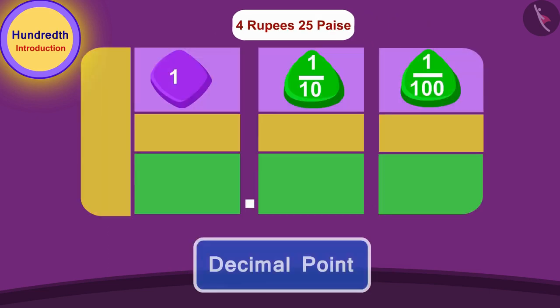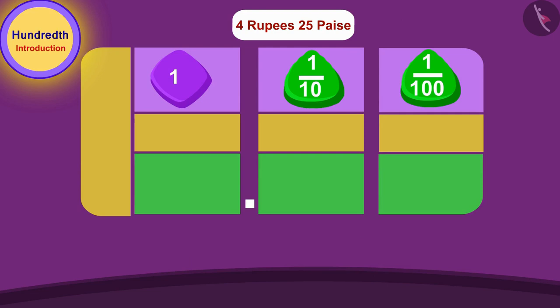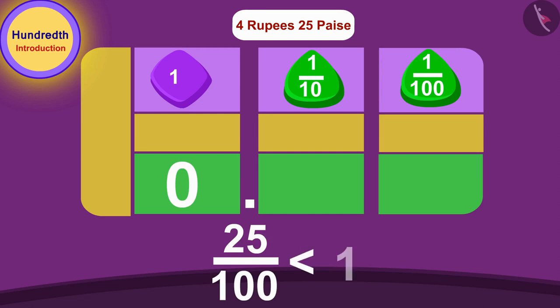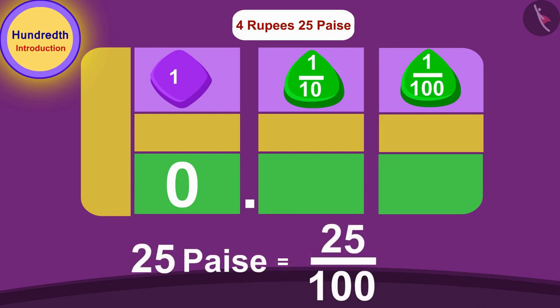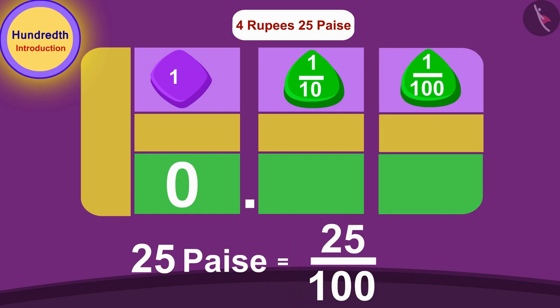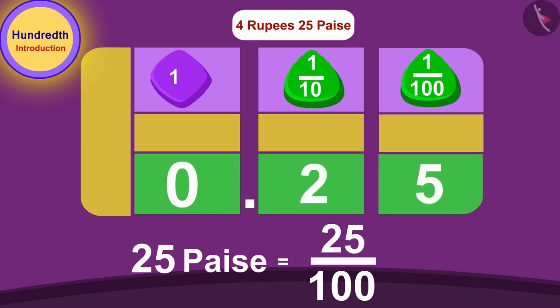So, we will first draw a decimal point. Then write zero before it, because 25 hundredth is less than one whole. Now, since 25 paise is 25 hundredth of a rupee, we will write the number 25 in front of the decimal point.